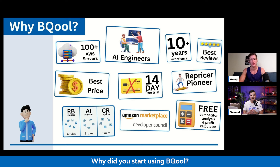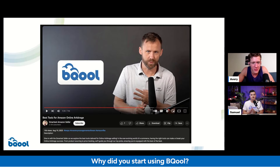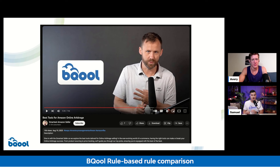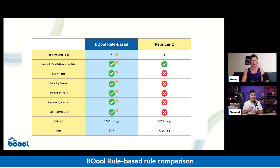Be Cool is one of the repricers that Scott Needham recommends as well — it's very safe and secure. If you're coming from another repricer, we have different advantages: five presets for rule base including match buy box, a handout for rule base, no credit card needed for the free trial. We have a lot of different filters and grouping, a very nice interface, and we start at $25, which is one of the most affordable in the industry, giving you a thousand listings — twice as much as some other repricers.